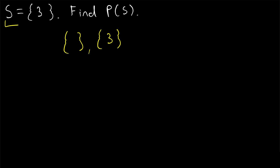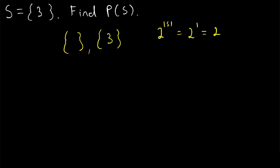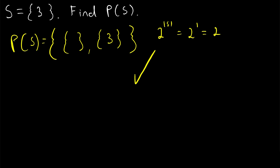How many subsets would we expect S to have? It should have two to the power of its cardinality subsets, which is equal to two to the power of one, which is equal to two. We've listed two subsets, so we're done. That's the power set of S. Example number two done.